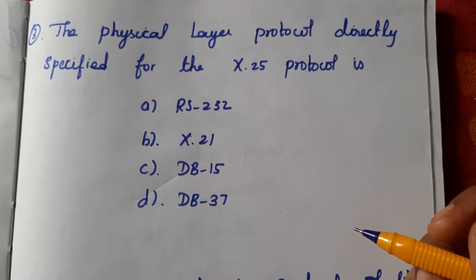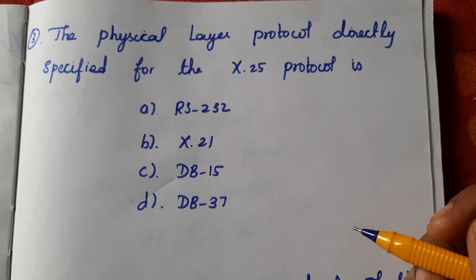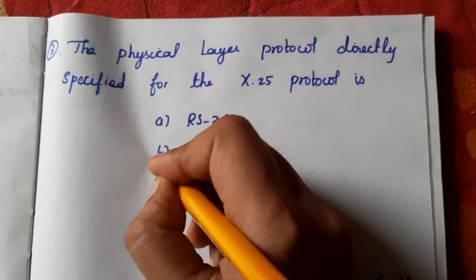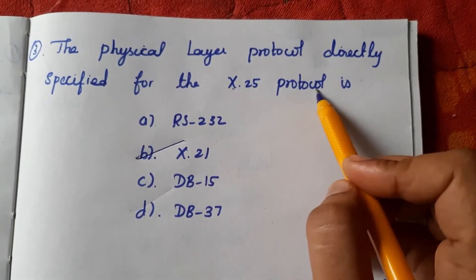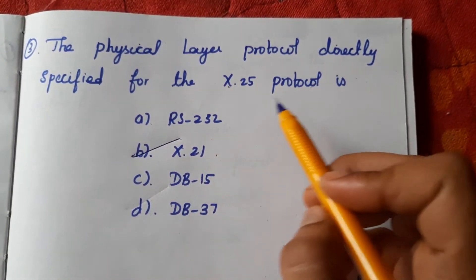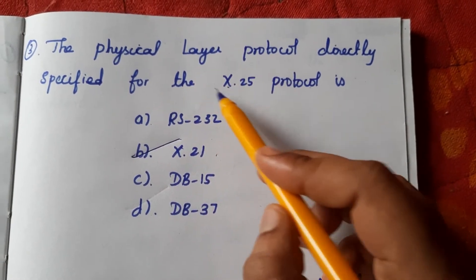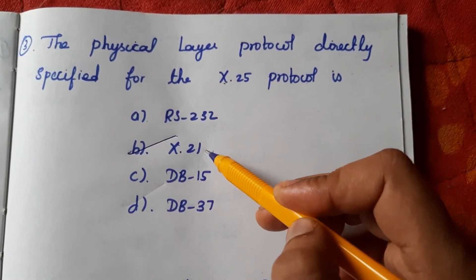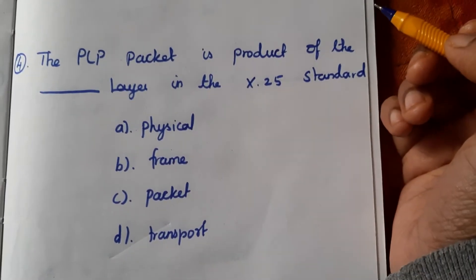Third question: The physical layer protocol directly specified for the X.25 protocol is X.21, so B is the answer. X.25 uses X.21 for defining the transmission medium in the physical layer.